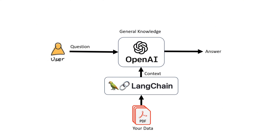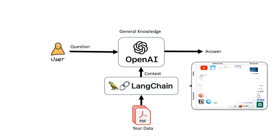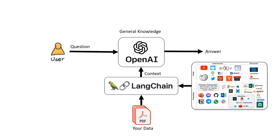For example, your data could be a book, a PDF file, a text file, a SQL database, or even a YouTube video. If you feed a YouTube video to Langchain, it extracts its audio, converts that audio to text, and then the text data can be used as context for the large language model. Currently, Langchain supports more than 80 different data sources.